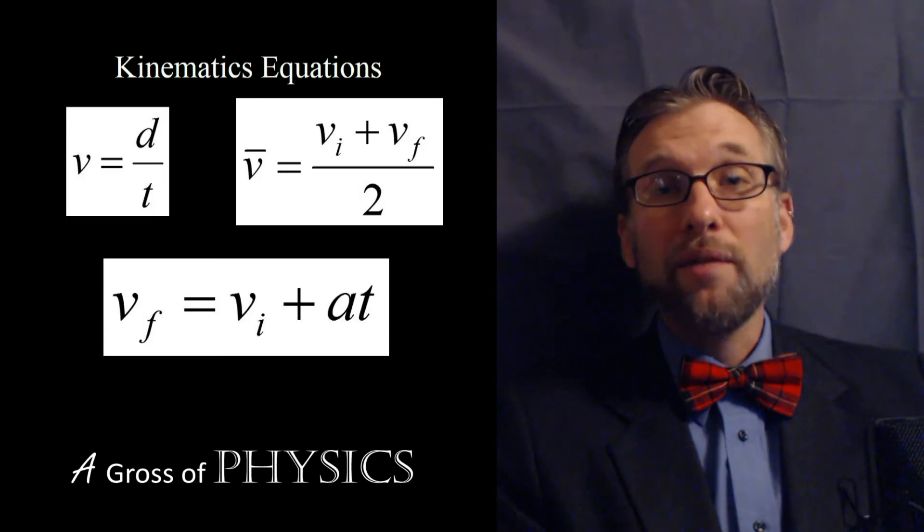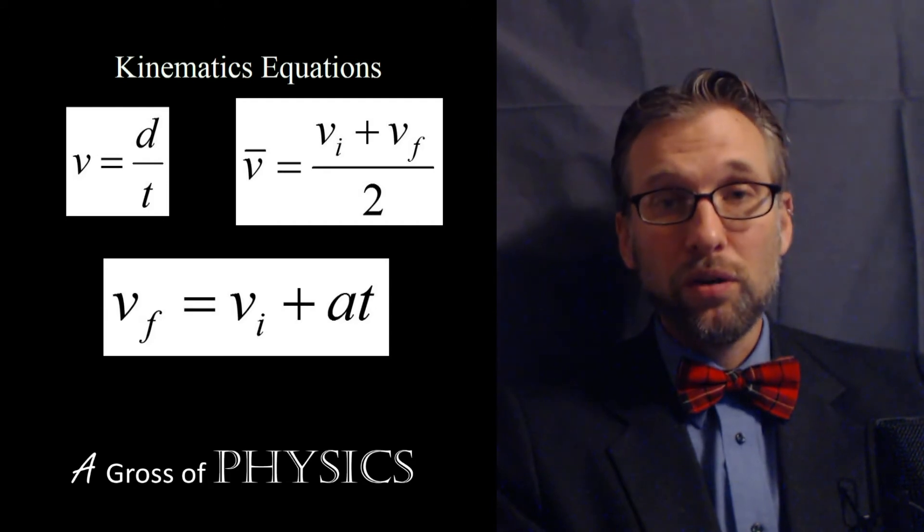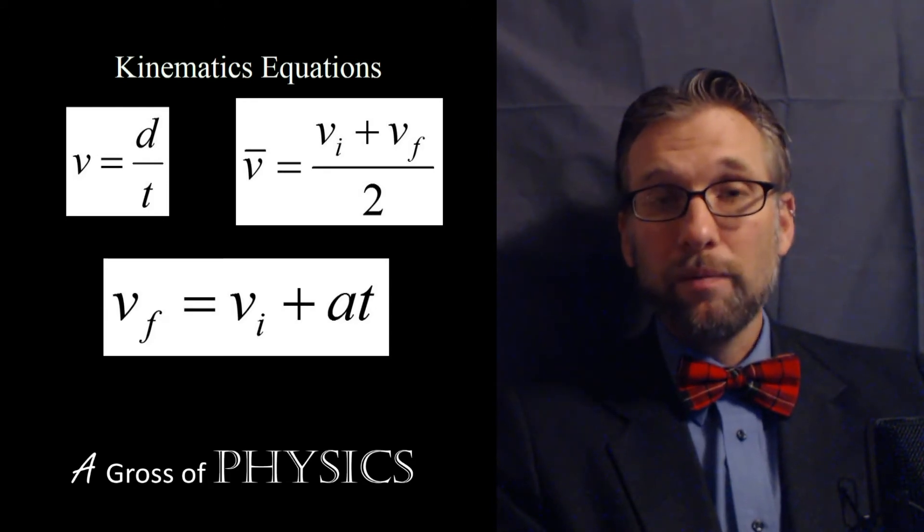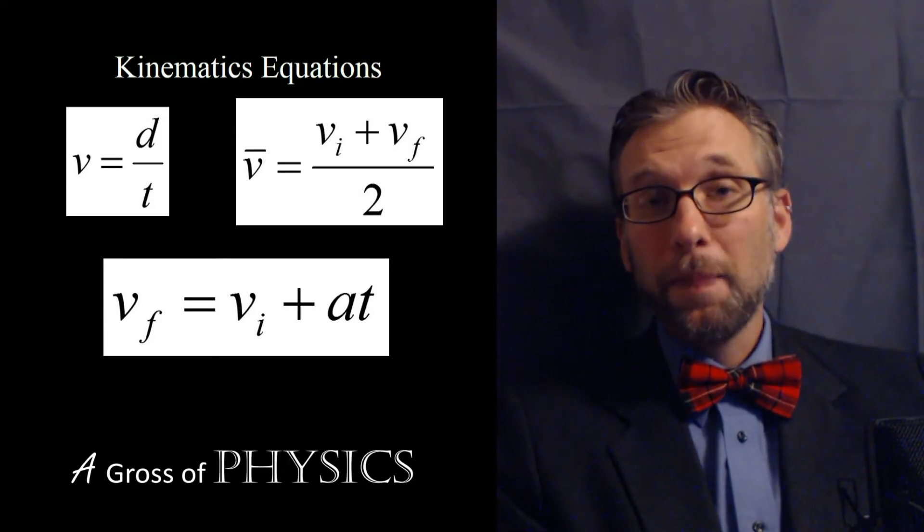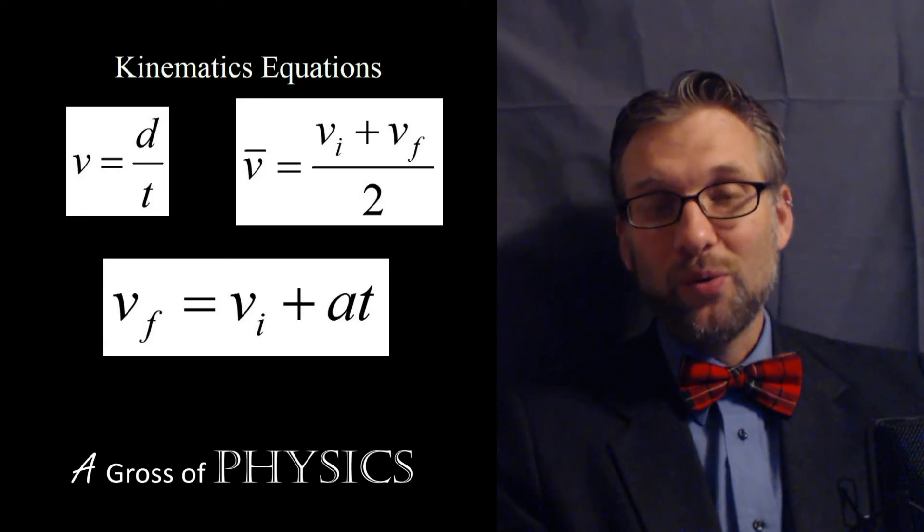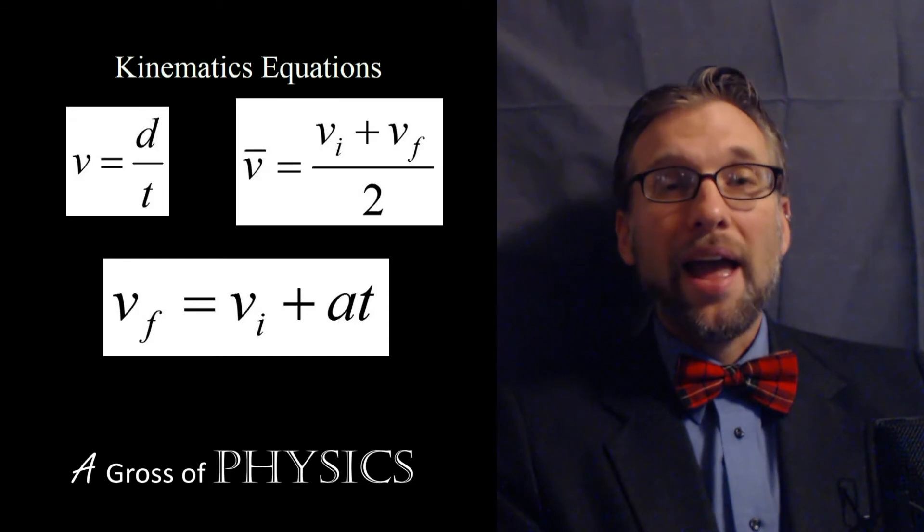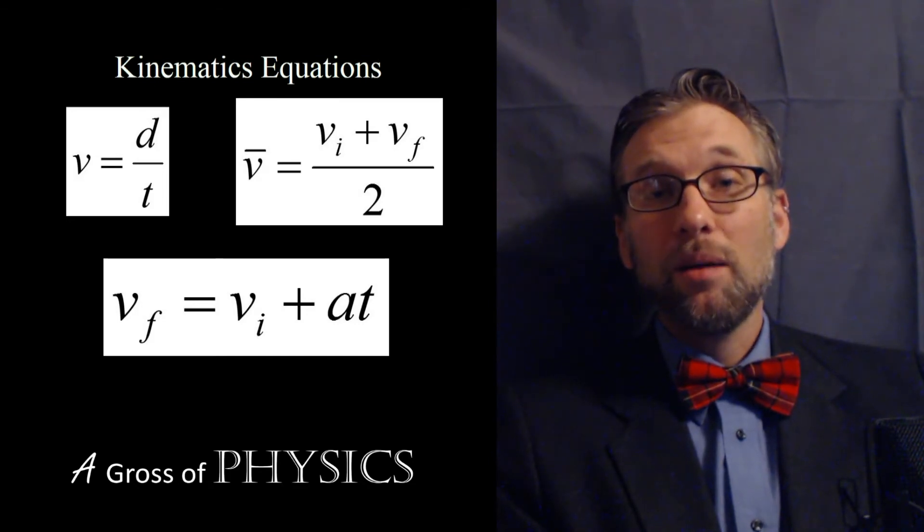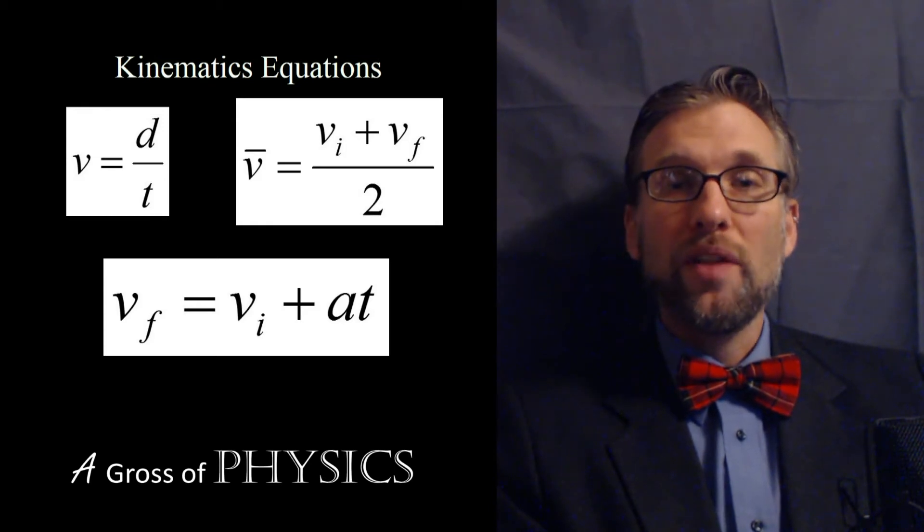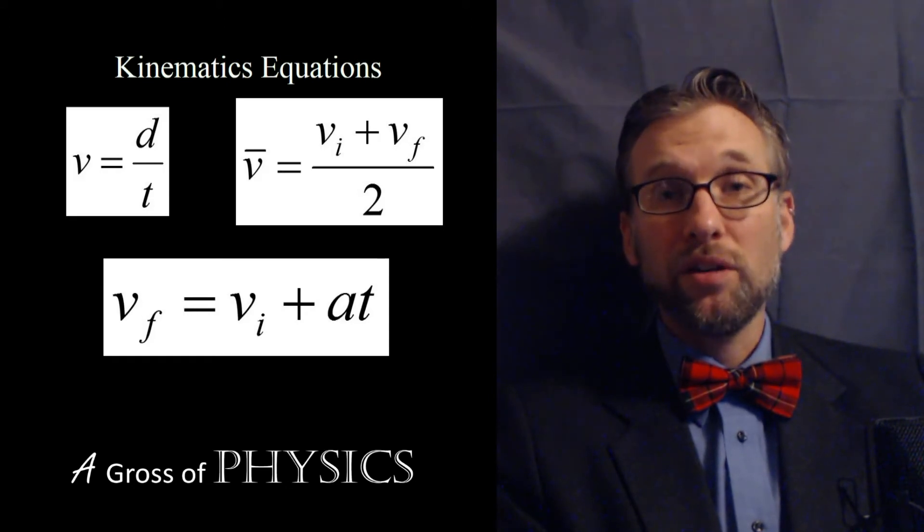Equation four is derived from the combination of equation one, two, and three. Equations one and two can be set equal to one another because they both share average velocity. You can combine that combined equation with equation three to form equation four. The equation is D equals VIT plus one half AT squared. I'll show you a derivation on the whiteboard.